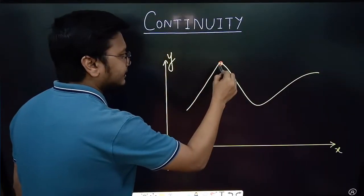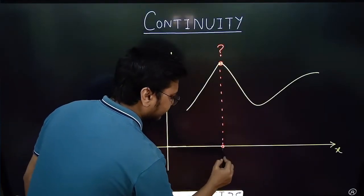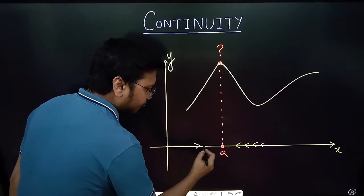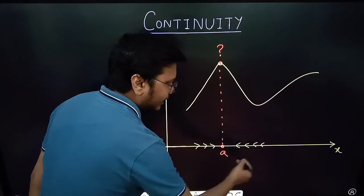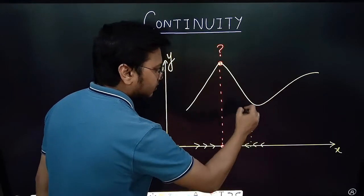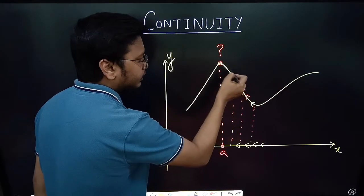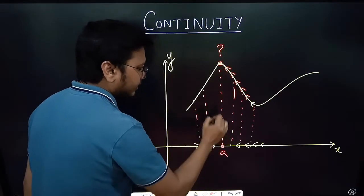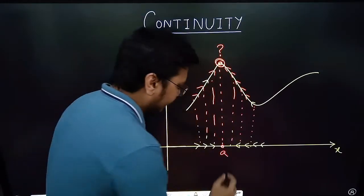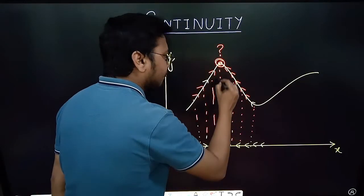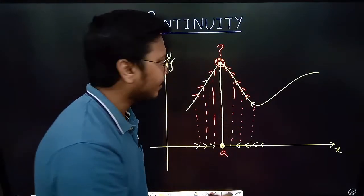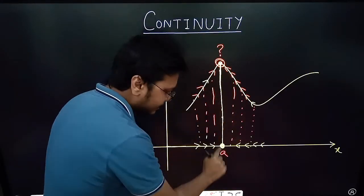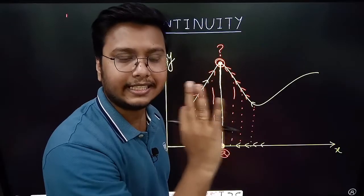If I have a function and ask: is it continuous at point x = a? I will approach 'a' from the right hand side and also from the left hand side. When approaching from the right, the function values slowly tend towards that point. When approaching from the left, the function also slowly approaches that very same point. And if I put x = a exactly, the function still gives the same value — if all three things happen, then we can say f(x) is continuous at that point.